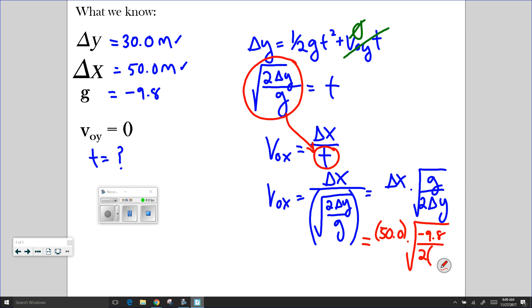Times the square root of negative 9.8 divided by 2 times... Now, I've got to make sure I remember that this projectile is falling downwards. Therefore, the y displacement is going to be negative 30.